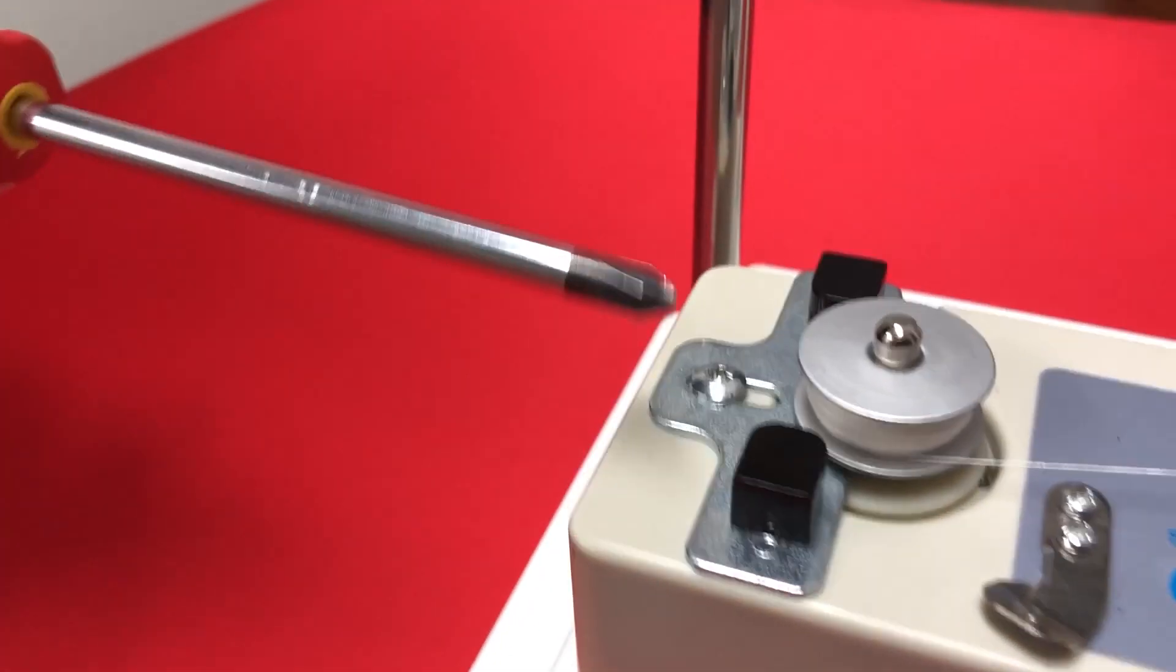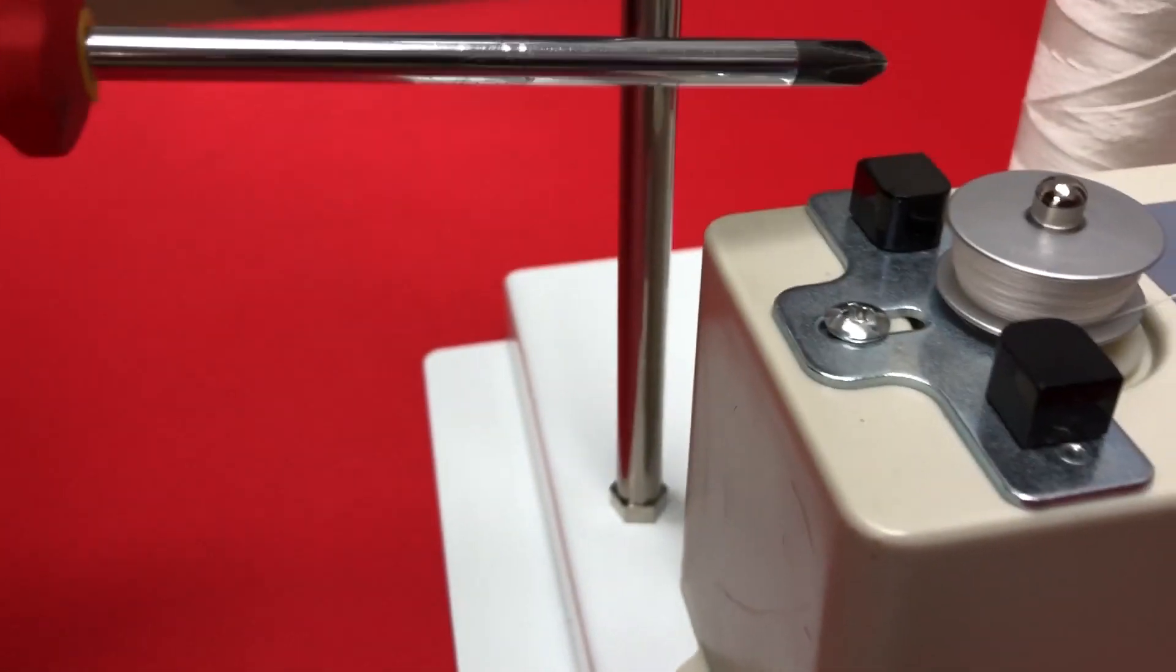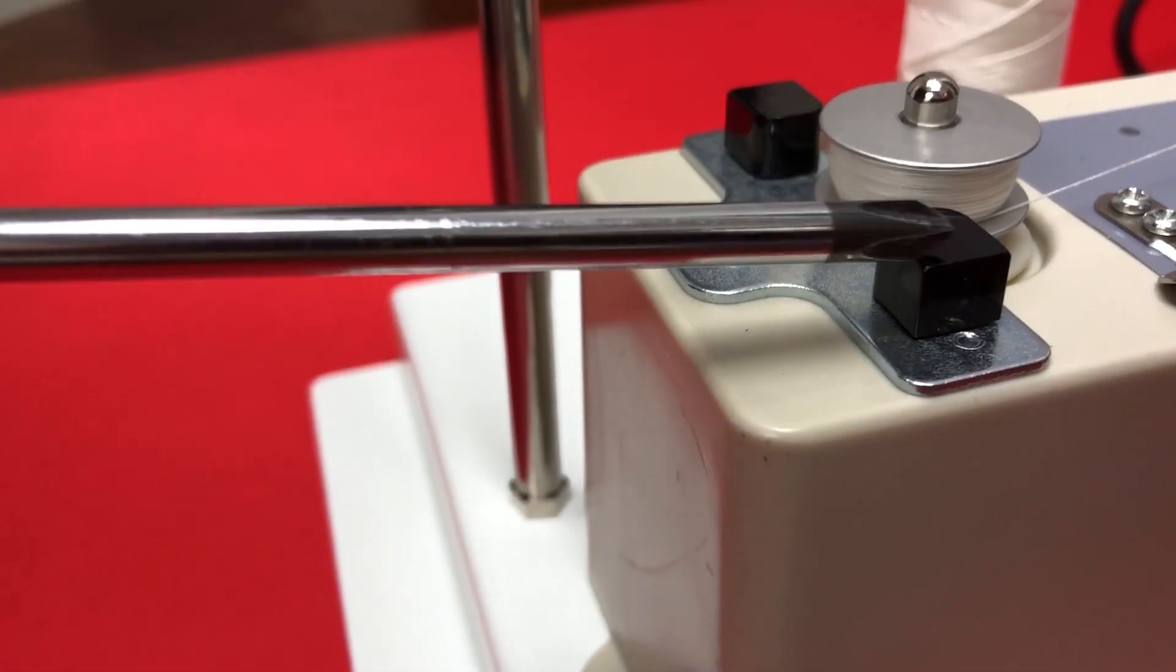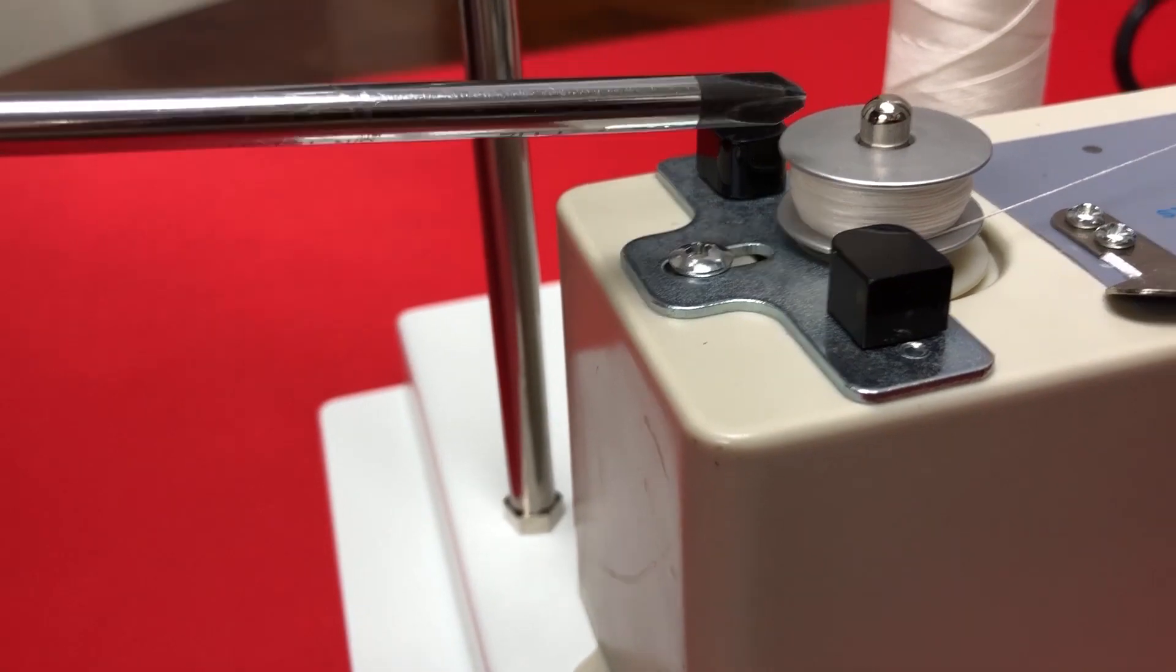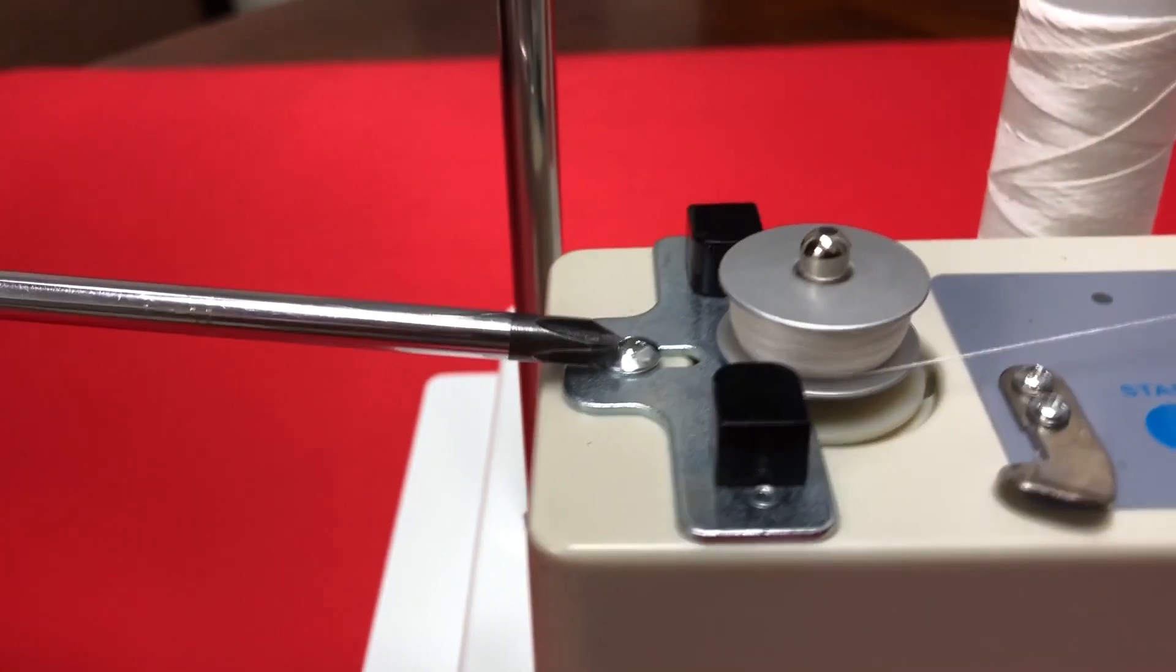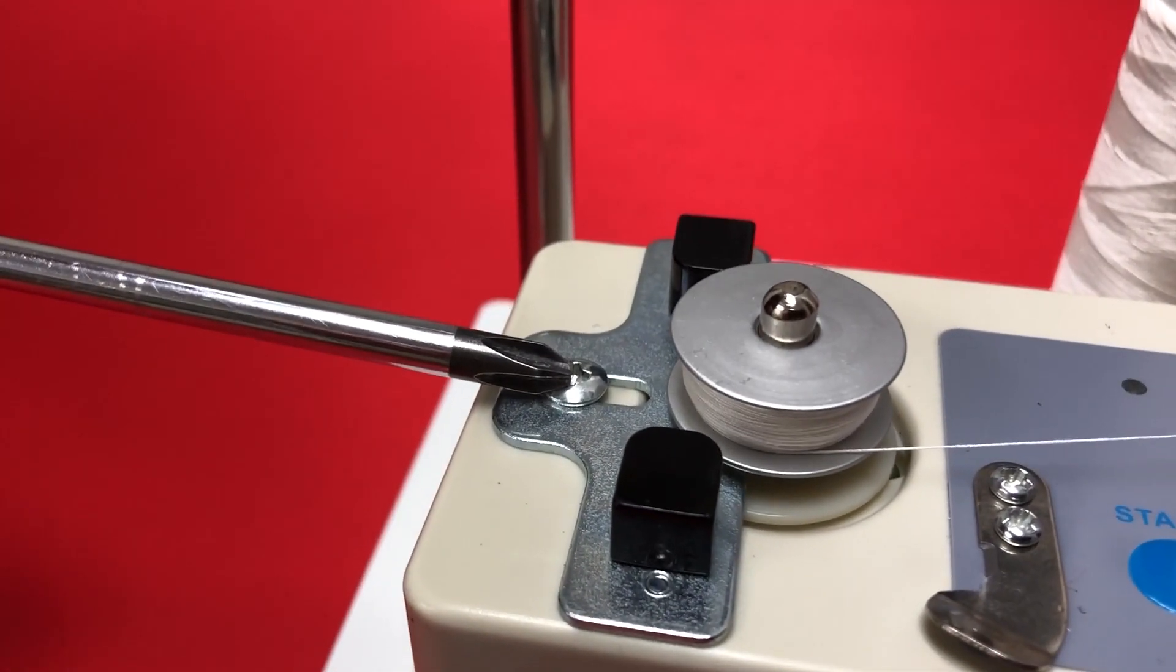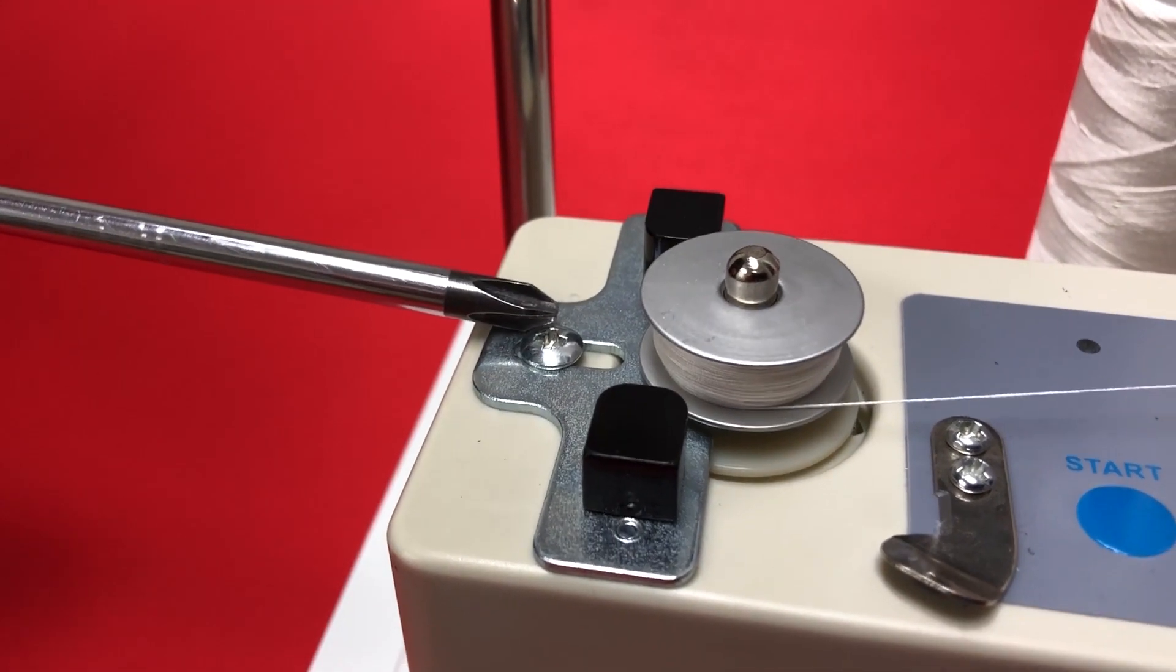The final one is the laser sensor here for your fill capacity, and this will go from one side to the other, and when that signal is broken, it will stop winding. There is an easy adjustment with one screw here, so you can either slide it in or out to get the perfect fill.